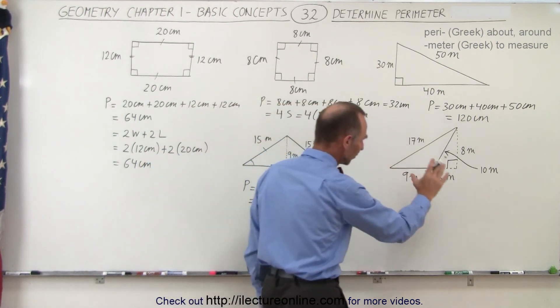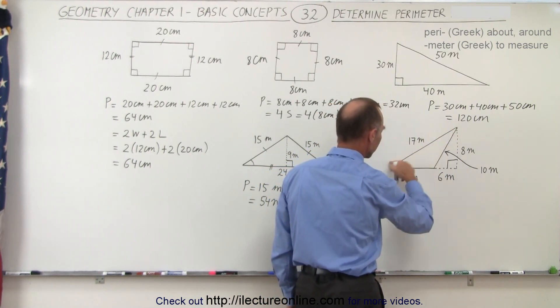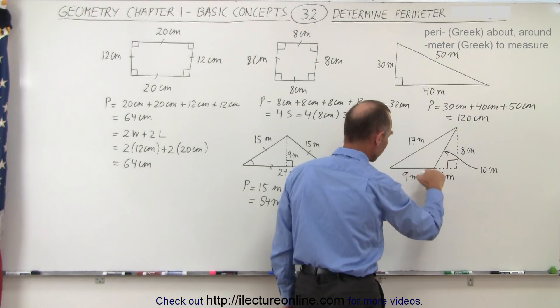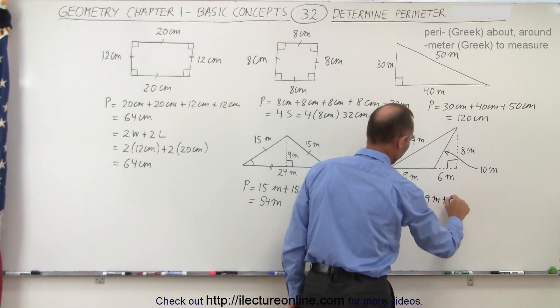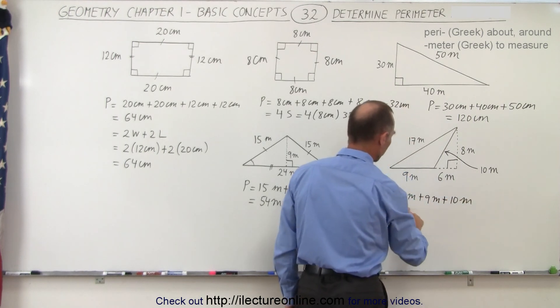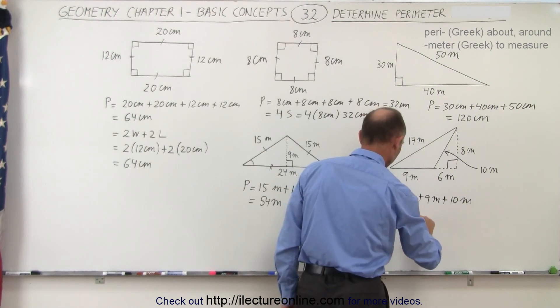And even though this triangle seems a little strange, we can simply say that this side is 17 meters long, 9 meters long, and 10 meters long, so the perimeter is equal to 17 meters plus 9 meters plus 10 meters, so that would be 36. Perimeter is equal to 36 meters.